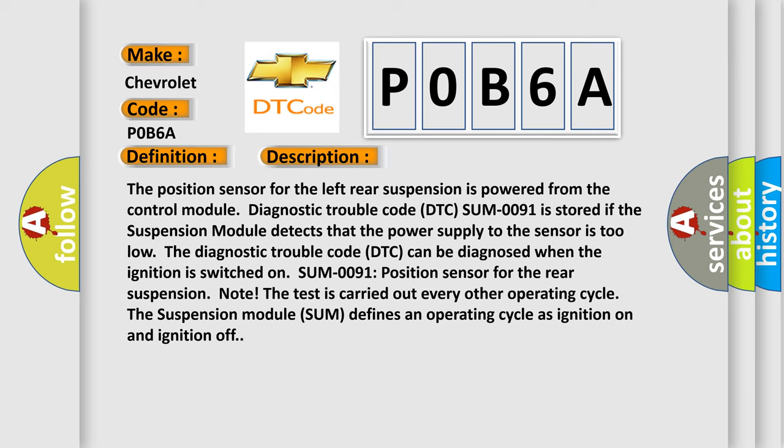Also, the diagnostic trouble code DTC can be diagnosed when the ignition is switched on. P0091 position sensor for the rear suspension note: The test is carried out every other operating cycle. The suspension module defines an operating cycle as ignition on and ignition off.